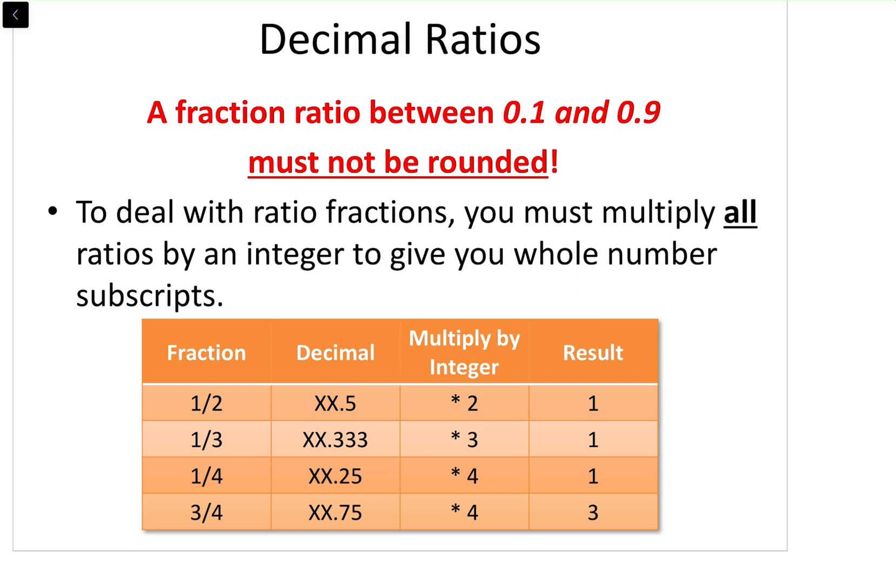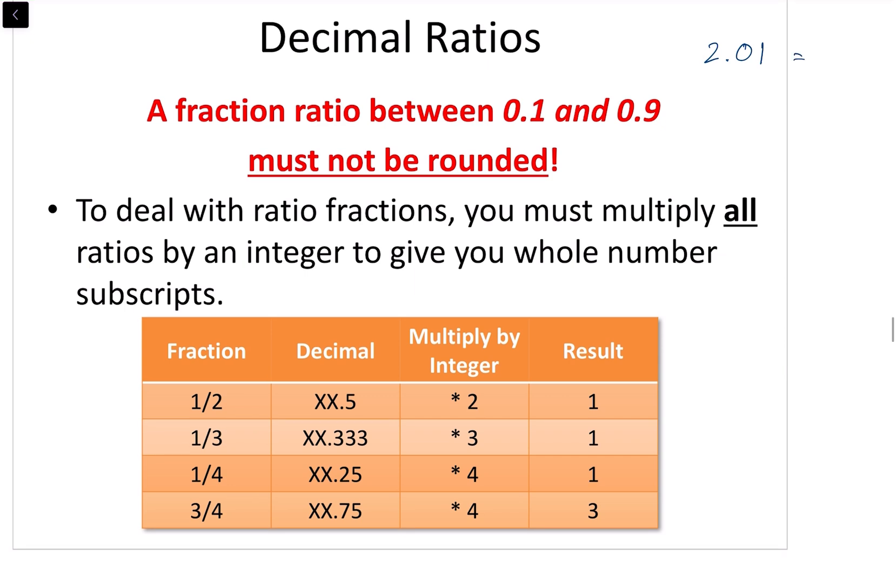Now, we got something like, for example, 2.01 as our final ratio after we divided the smallest mole value and divided all those values by that value. We would get something like 2.01, which we rounded to 2. And we said, okay, well, this is going to be the subscript for carbon, so it's C2.